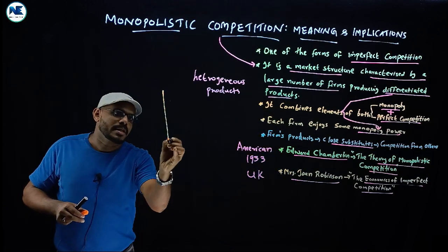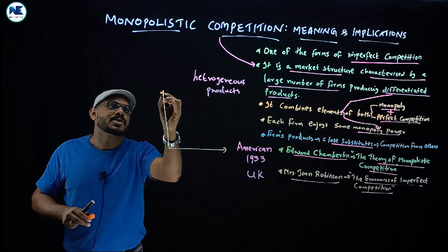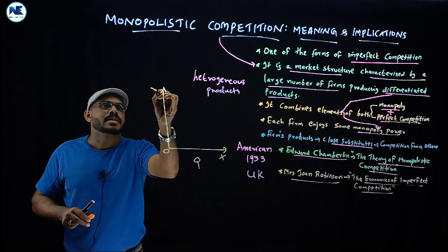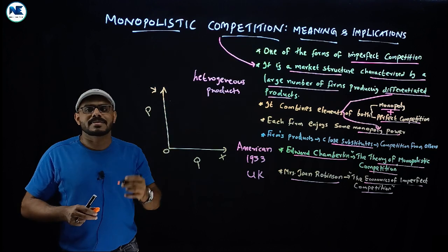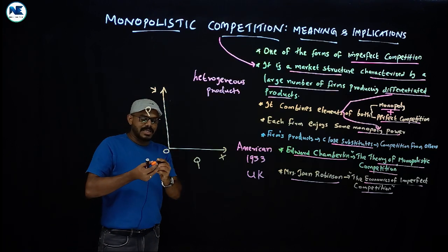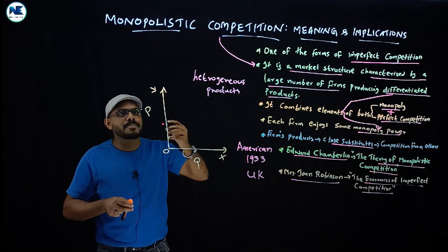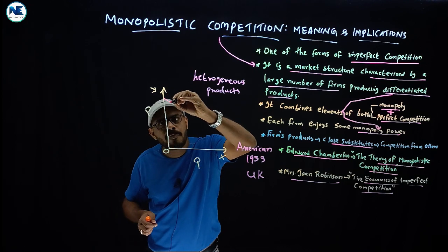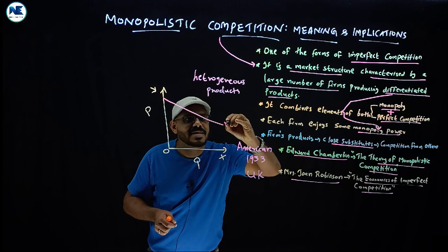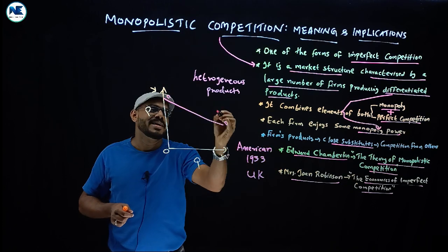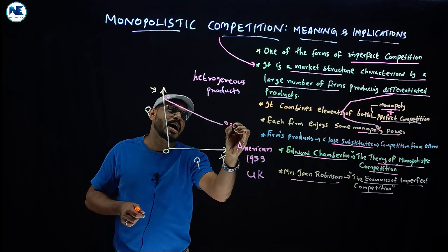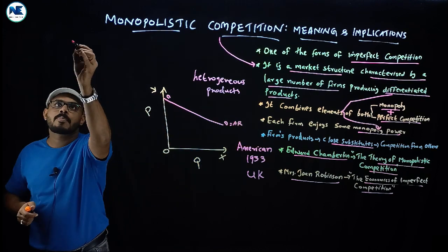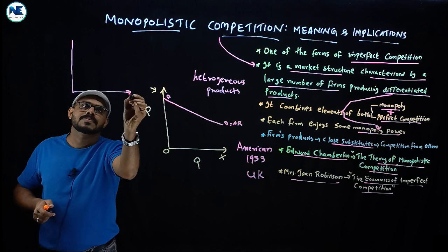Regarding the demand curve in monopolistic competition: on the x-axis we take quantity and on the y-axis we take price. The demand curve — which is also the average revenue curve — is downward sloping but more flat compared to monopoly.